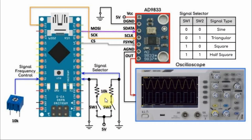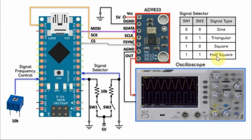We have a 2-bit DIP switch connected to pins D3 and D4 of the Arduino, which act as a signal selector. According to the truth table, 00 gives a sinusoid, 01 gives triangular, 10 gives a square wave, and 11 gives a square wave with half the frequency.